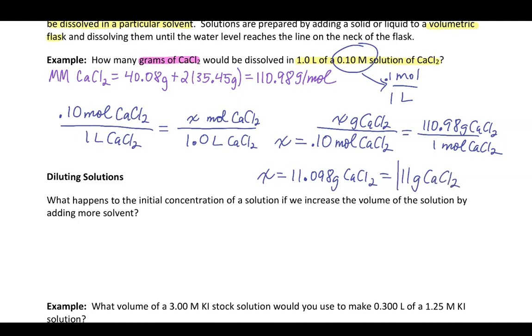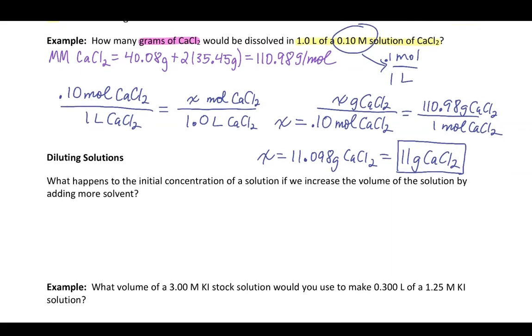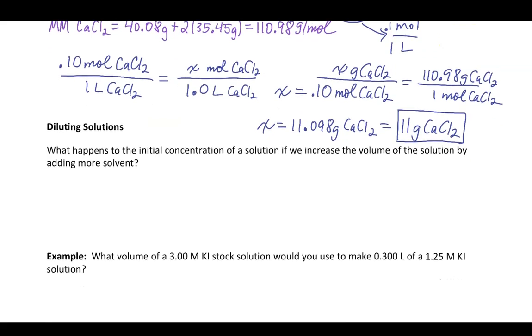So, what this tells us is if we're going to make one liter of this 0.1 molar solution, we need 11 grams of the CaCl2 to be mixed up to a volume of one liter. So we need to add enough water to get that to be up to one liter.